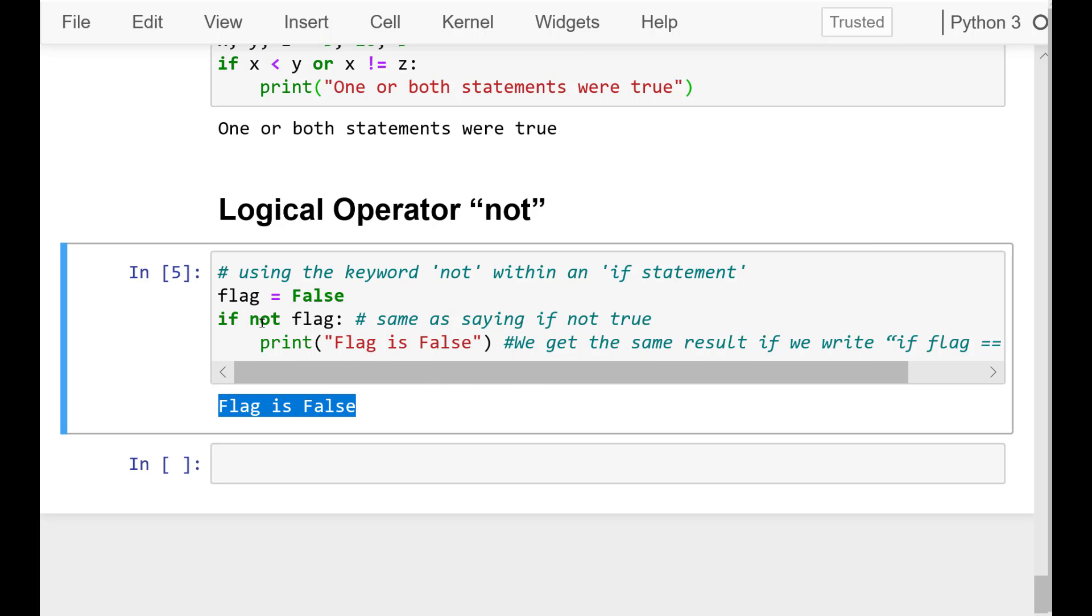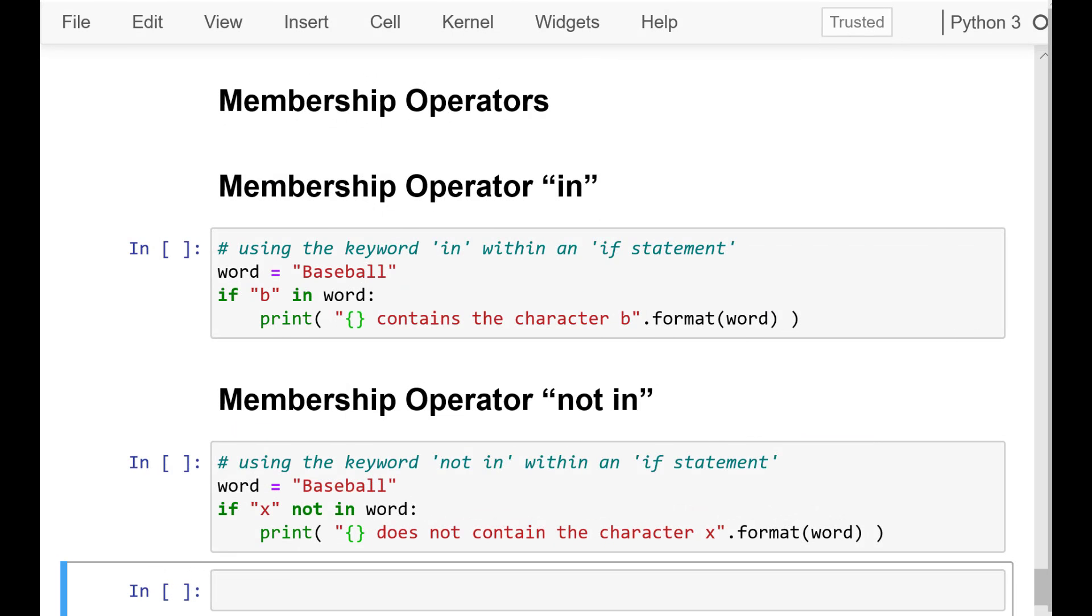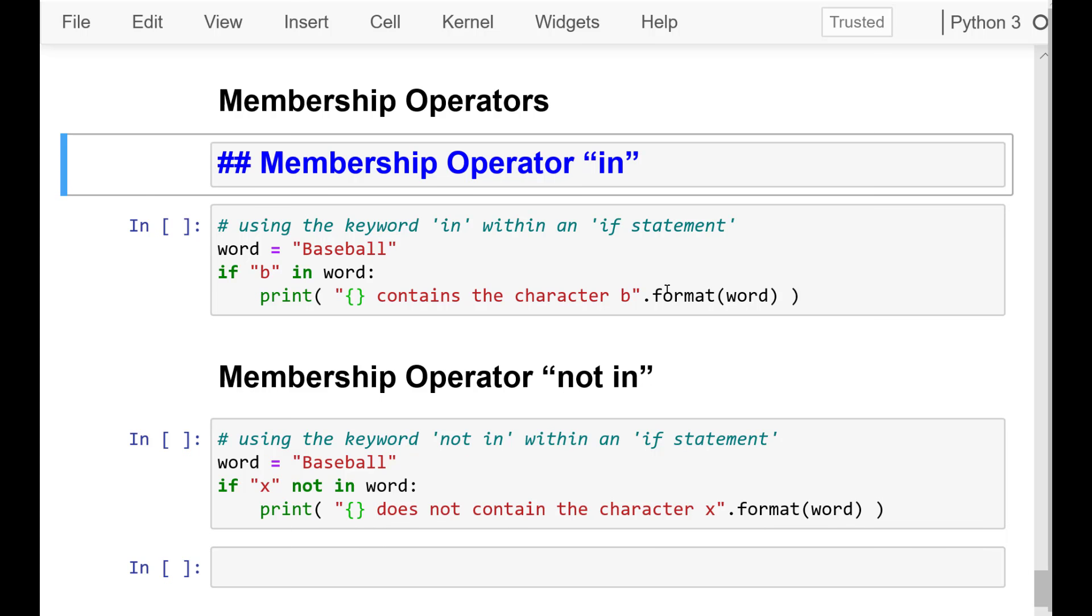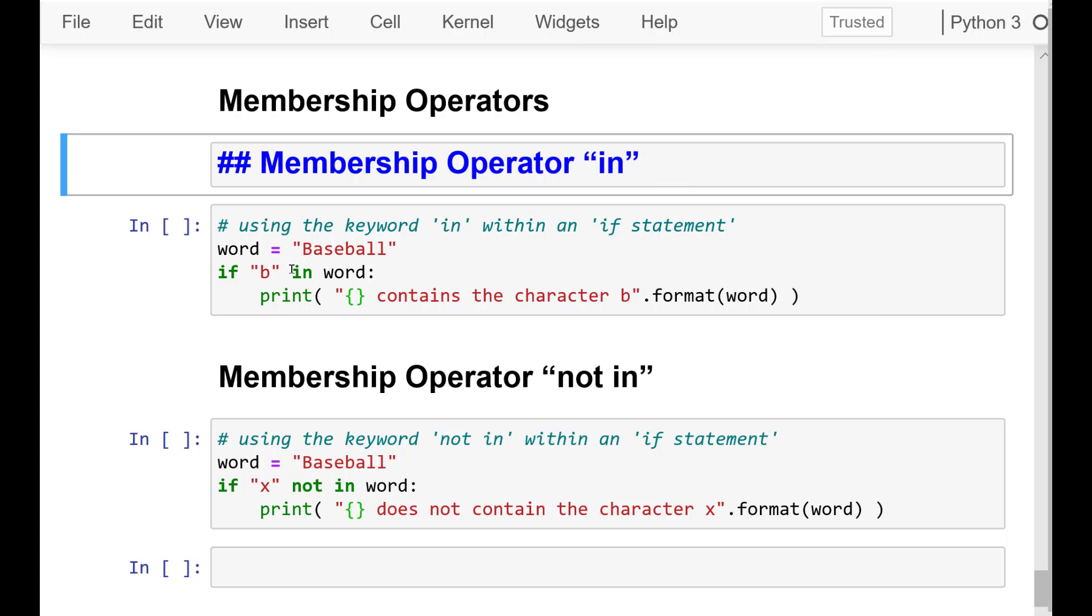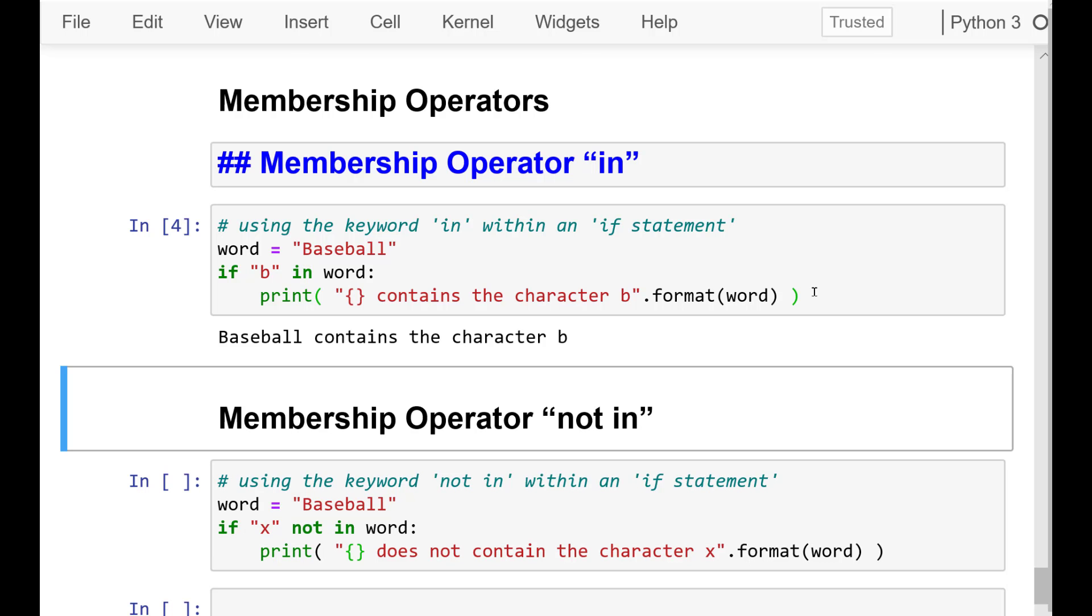Now, some words about membership operators. Membership operators are used to test if a sequence appears in an object. There are two keywords that we can use to check if a value exists in an object or not. Let's check them out. When you want to check if a given object has a value appear in it, you use the IN operator. The best use case is checking for a certain value within strings. Let's check out an example.